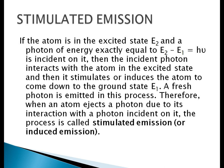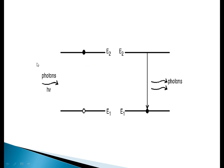Stimulated emission: if the atom is in the excited state E2, and a photon of energy exactly equal to E2 minus E1 (equal to h nu) is incident on it, the incident photon interacts with the atom in the excited state and stimulates or induces the atom to come down to the ground state E1. A fresh photon is emitted in this process. This is called stimulated emission or induced emission.